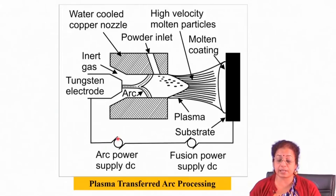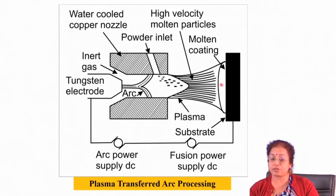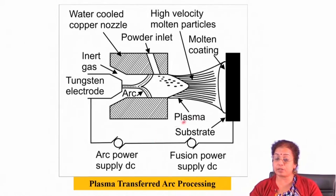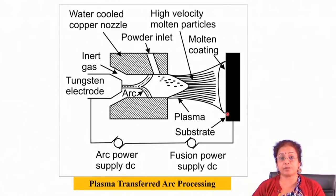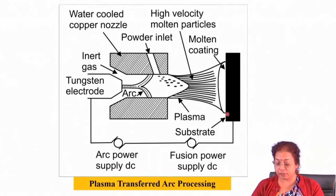Another technique, closer to welding, is plasma transfer arc processing. Here, the electric arc current passes through the plasma and strikes the substrate surface. Because the plasma is very close to the substrate, the molten material gets deposited like weld overlaying. In plasma transfer arc welding, there are no porosities — you get a continuous melted layer like in a cladding operation, making it very applicable for deposition of clad layers on substrate surfaces.